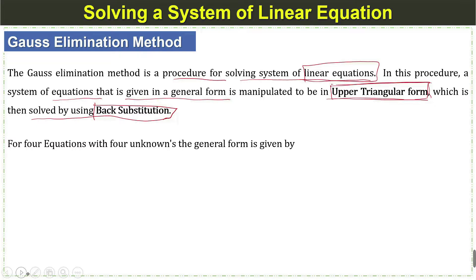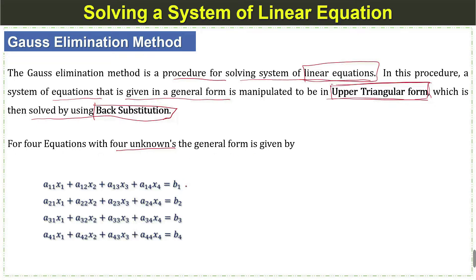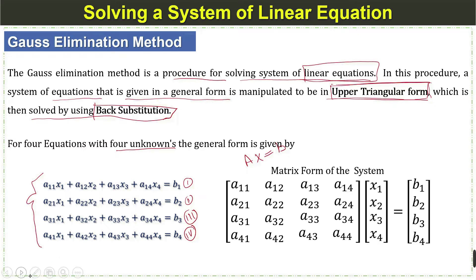For example, for 4 equations with 4 unknowns, the general form consists of equation 1, equation 2, equation 3, and equation 4. We can also write these equations in matrix form, that is Ax equals b. This is the matrix form for 4 general equations with 4 unknowns.